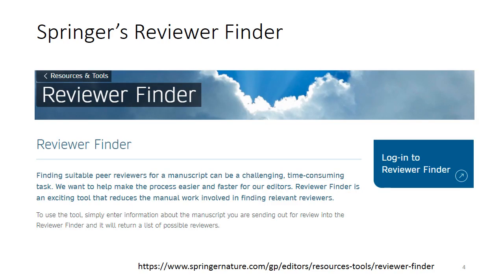We tried to find all existing software for this problem, and one of the popular tools is Springer's Review Finder. This tool offers to select an expert based on the metadata of publications. The correspondence algorithm returns a list of researchers who have a publishing profile similar to the profile of the submitted manuscript. But sometimes the information from the profile is not enough for a qualitative analysis. In our paper you can read about other similar tools.